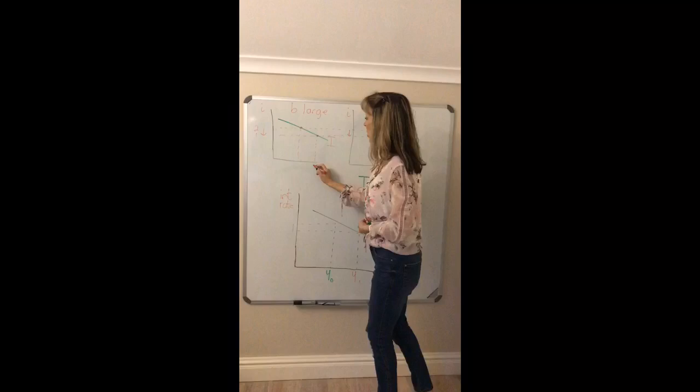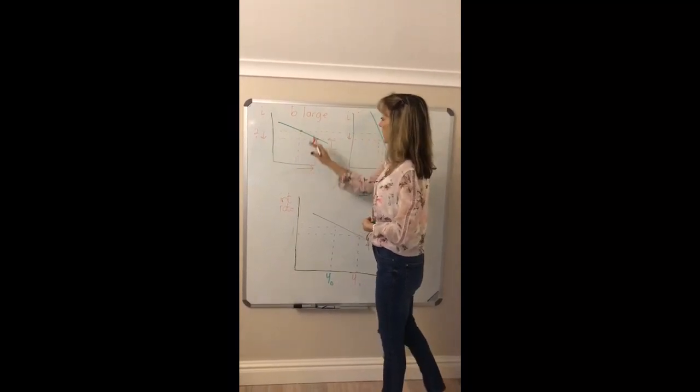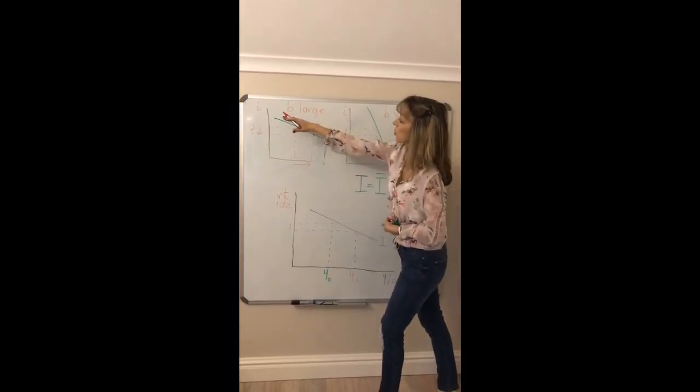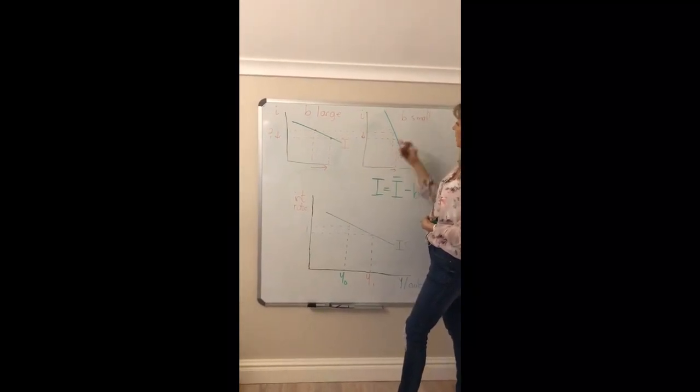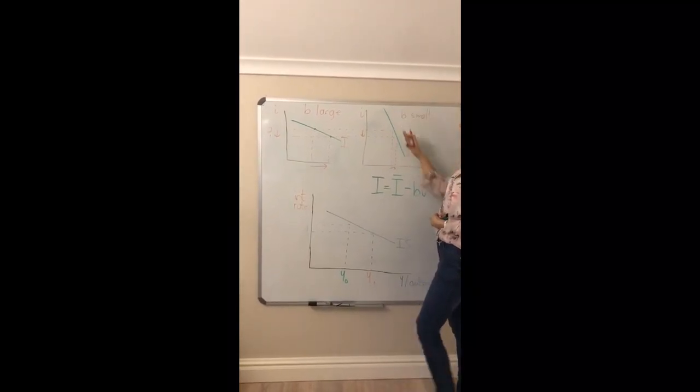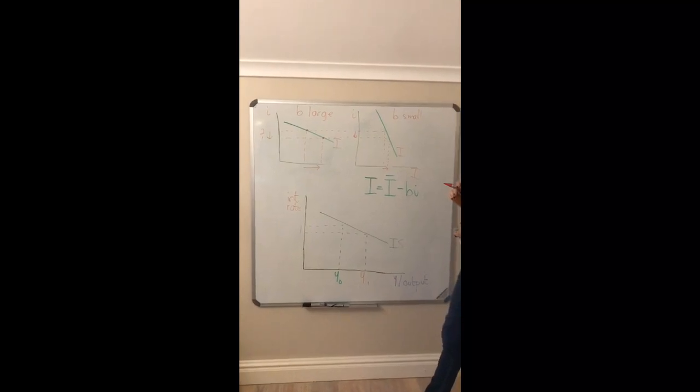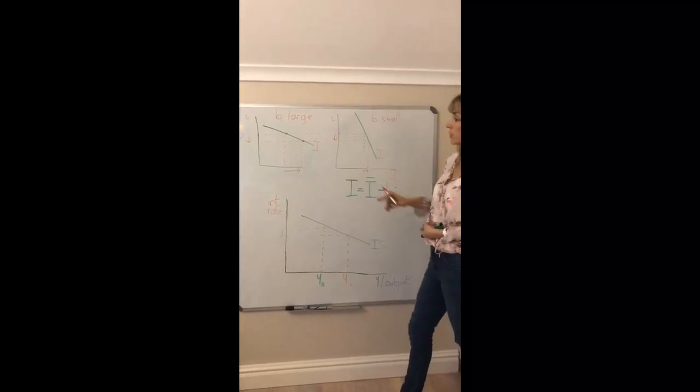you're going to get a much bigger rise in planned investment when your B is large or your curve's flatter, as opposed to this situation here where B is small or your planned investment schedule is steeper. Your change in investment is much smaller.